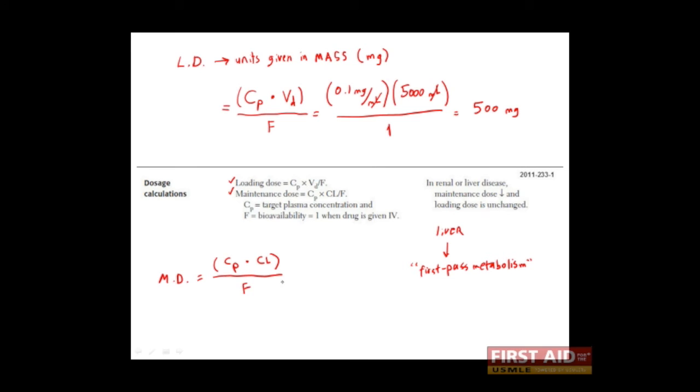Again, let's assume that we're giving our maintenance dose by IV and bioavailability is 1. We said that our target concentration is 0.1 milligrams per milliliter. And let's say that the body clears the plasma of this particular drug at a rate of 50 milliliters per minute. Again, clearance is telling us how much of the plasma is completely cleared of the drug per unit time. In this case, 50 milliliters of plasma is completely cleared of the drug per minute. Dividing by our bioavailability and cancelling out our units and carrying out the equation, we see that the maintenance dose is 5 milligrams per minute.